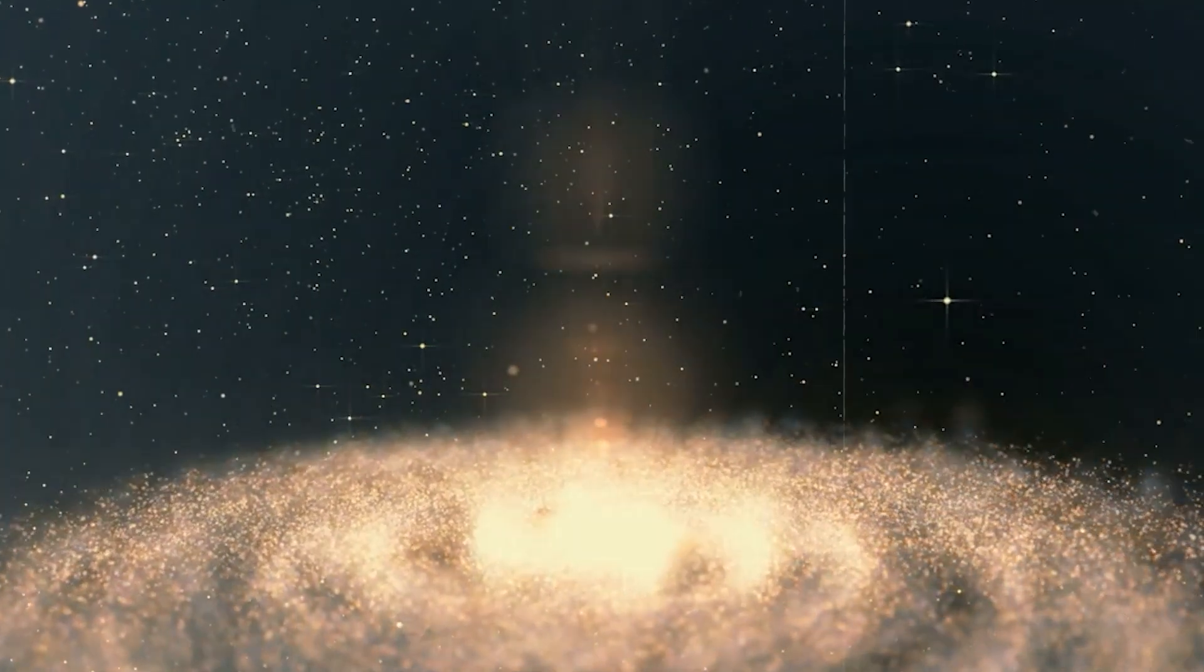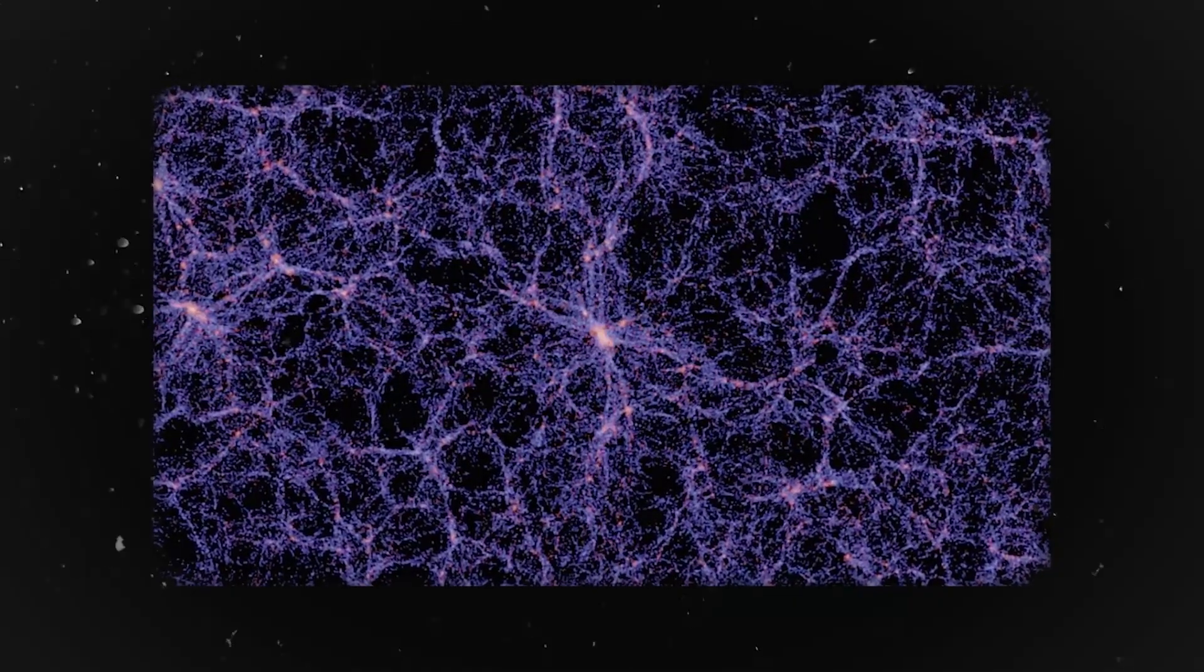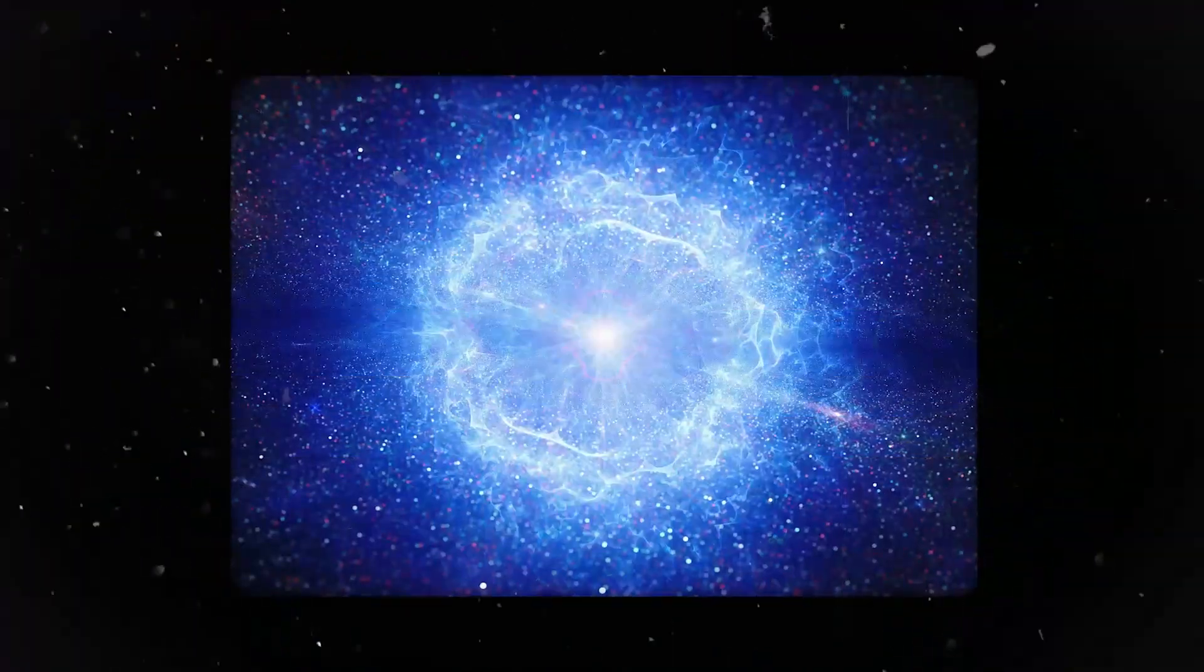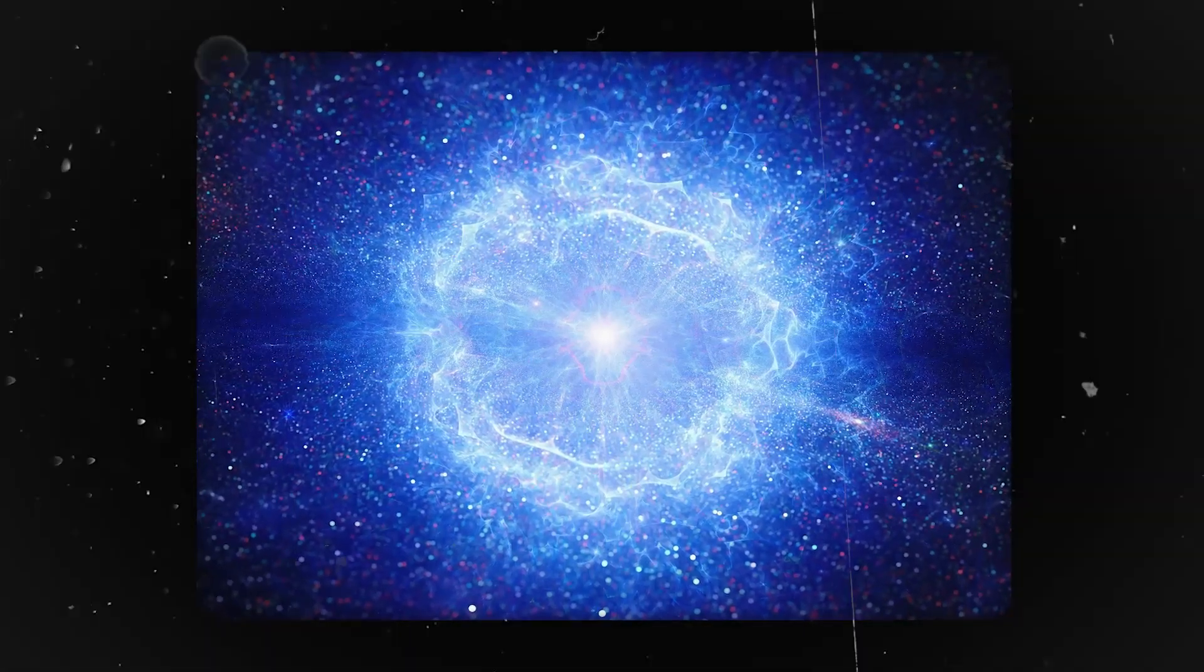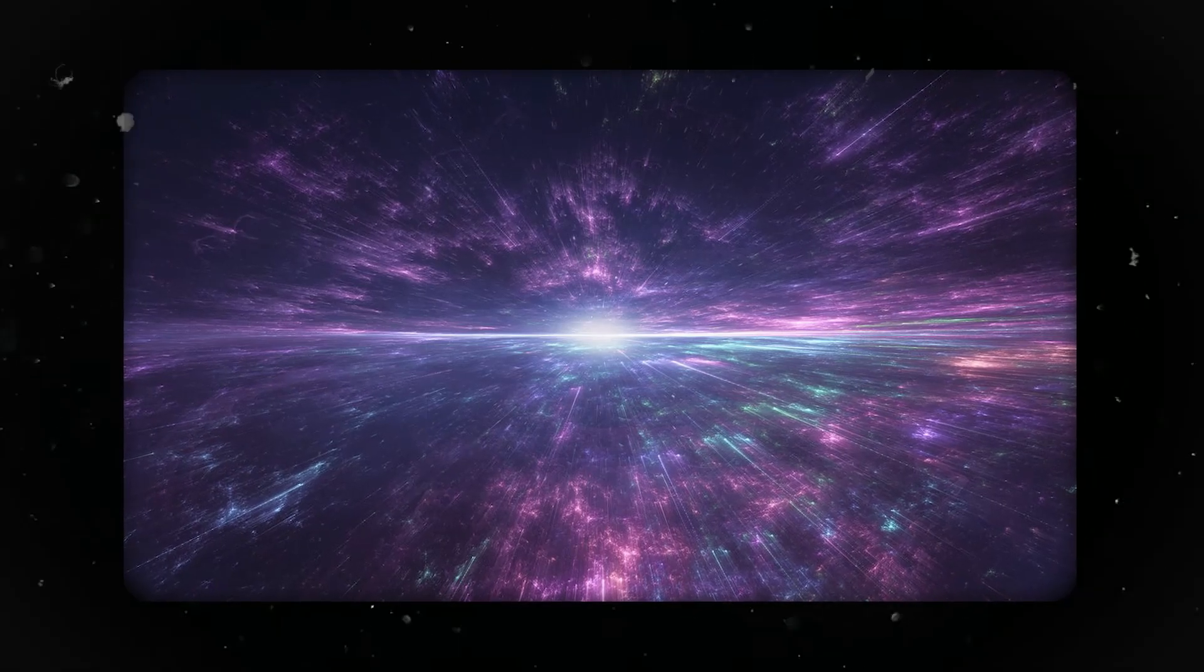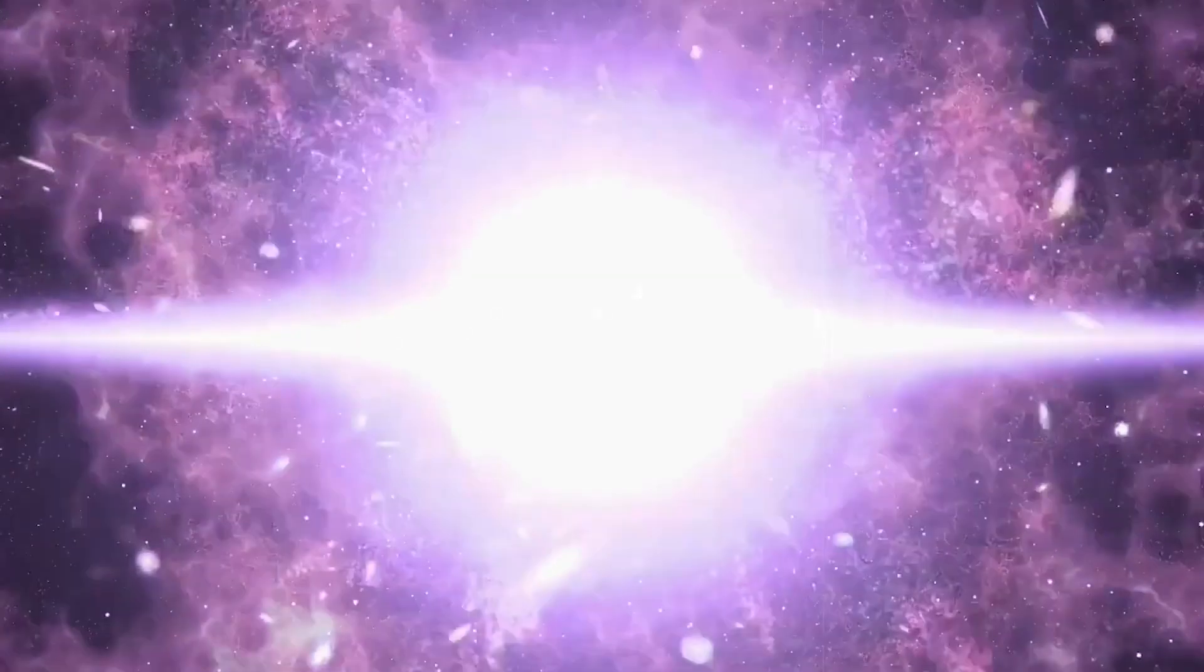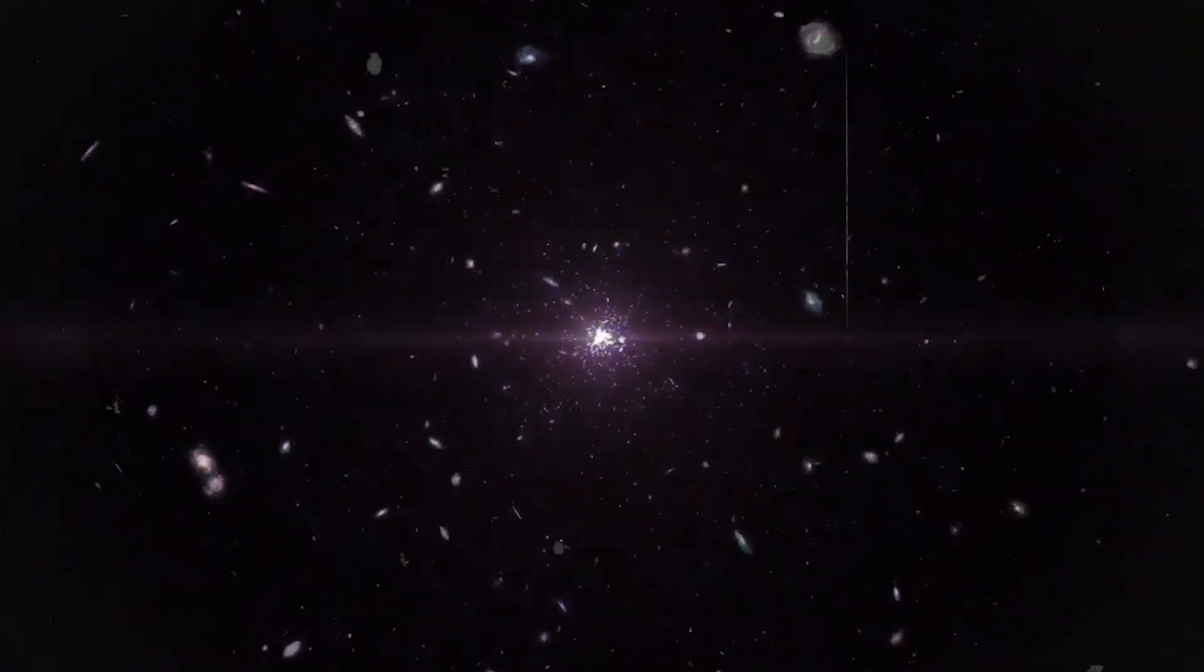Another captivating line of inquiry delves into the realm of cosmic strings. These one-dimensional entities, remnants of the Big Bang, possess immense gravitational pull. If they exist, their tendrils could have stretched across vast cosmic distances, influencing the distribution of matter in the early universe, potentially birthing the Big Ring. Picture these cosmic strings as celestial puppeteers weaving the tapestry of galaxies with their invisible threads.